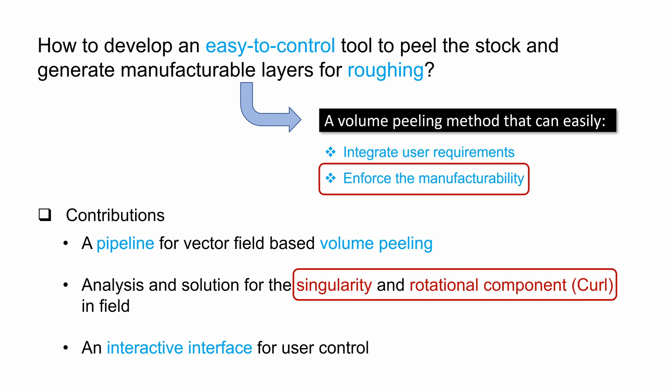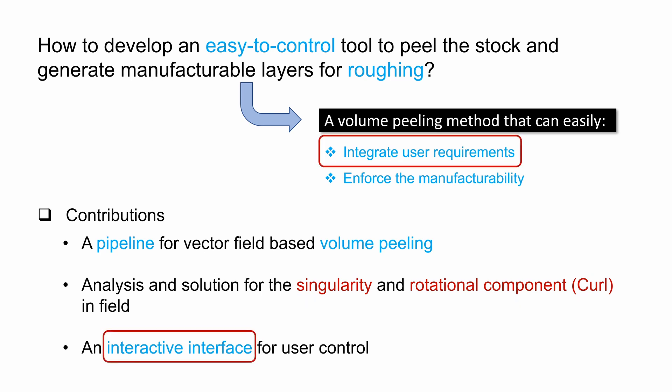In this work, we show how the singularities and curl of the vector field are controlled to ensure manufacturability, which relates to the accessibility of the tool as well as preventing any intermediate floating material. We also provide a user interface for users to easily introduce their requirements and modify the shape of the layers by introducing simple local constraints, which translate to a global shape.